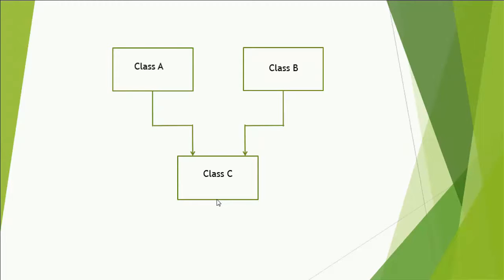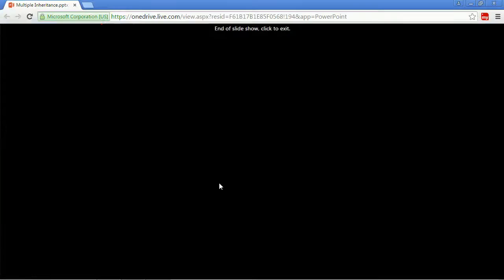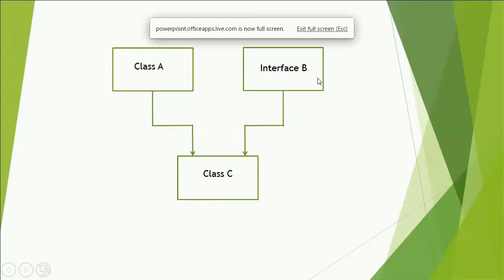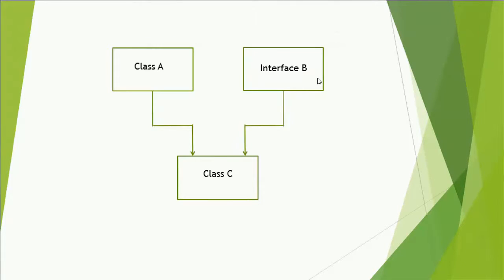But in PHP, a class cannot extend more than one class, or a class cannot have more than one base class. But how can we achieve multiple inheritance in PHP? The solution is using an interface. Here you can see class A has child class C, and class C also implements interface B. In this way we can achieve multiple inheritance in PHP.